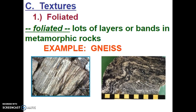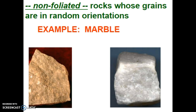When we classify metamorphic rocks, we look at their composition as well as their foliation. Foliation is kind of like lots of layers or bands in a metamorphic rock. Foliation comes from the word 'folio' in Latin, which denotes a book or a page, and so these layers kind of look like pages in a book. An example of a foliated metamorphic rock is the rock called gneiss — the G is silent. Gneiss is what happens when the igneous rock granite undergoes heat, pressure, or chemical activity. If there are no layers or bands, we call those metamorphic rocks non-foliated — rocks whose grains are in more random orientations.